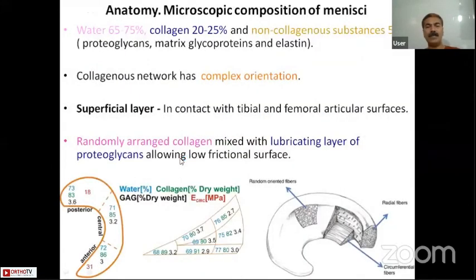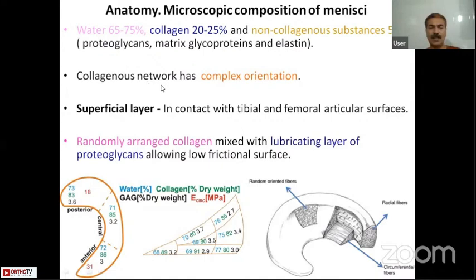Regarding microscopic anatomy, the menisci are composed of water (around 65 to 75 percent), collagen (20 to 25 percent), and non-collagenous substances including proteoglycans, glycoproteins, and elastin (around 5 percent). The collagenous content has a very complex orientation. The layers of the menisci are three: the superficial layer, the lamellar layer, and the deep central layer.